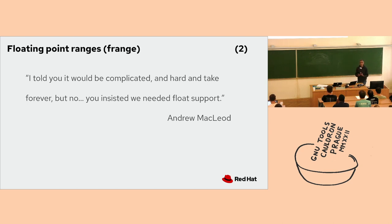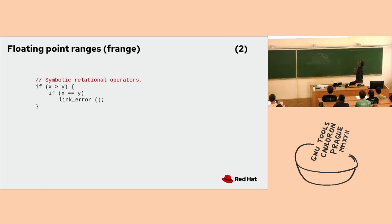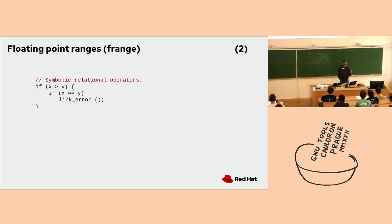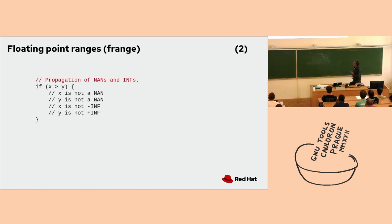I'll cover what we do in order from easiest to hardest in terms of implementation. The first thing we were able to do was dealing with symbolic relational operators. For example, if we know that X is greater than Y on the true side, we could fold the second conditional because we know X cannot equal Y. We could do that pretty much without knowledge of NaNs and other things, because we know that anything on the true side automatically doesn't have any NaNs. We were able to do this with a relational oracle that is completely separate from ranges and is built on top of the Ranger.